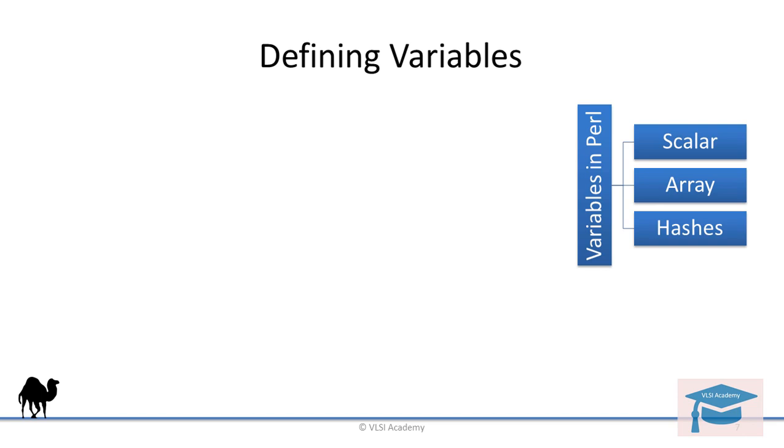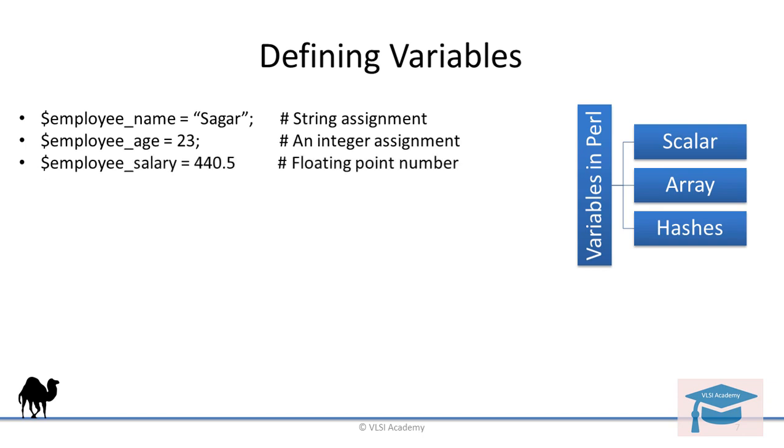Let's see how to define the scalars first. As we explained earlier, every scalar must begin with $. This is how Perl compiler understands the variable type. This is how a string assignment is done, how strings are defined, how an integer is defined and how a floating point number will be defined.